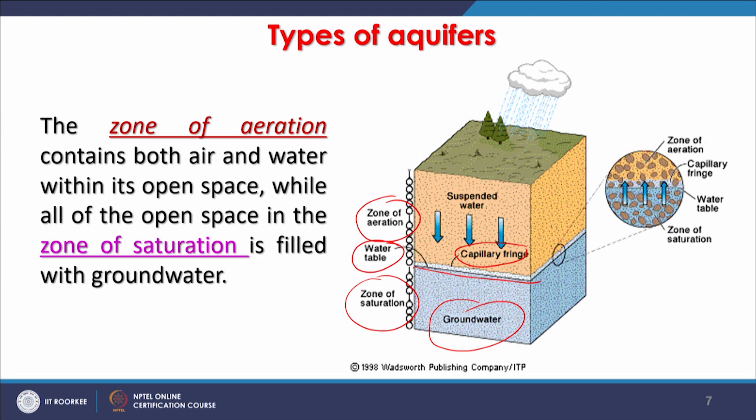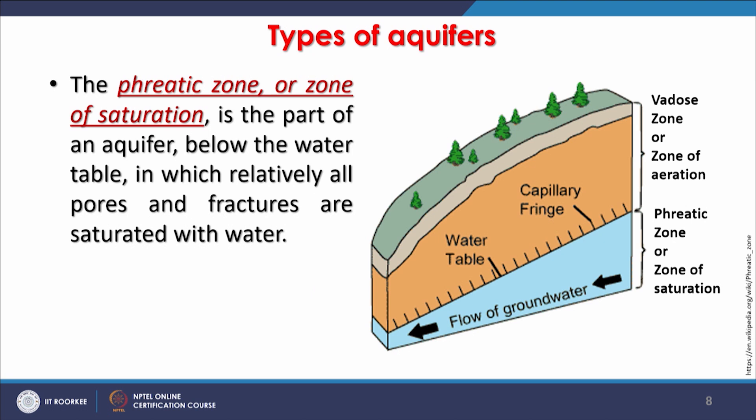The capillary fringe carries salts upward. If capillary action occurs near the surface under shallow groundwater conditions, salts come to the surface and the problem of salinization occurs — as discussed previously in the context of Punjab and parts of Haryana. The phreatic zone or zone of saturation is the part of an aquifer below the water table in which relatively all pores and fractures are saturated with water.